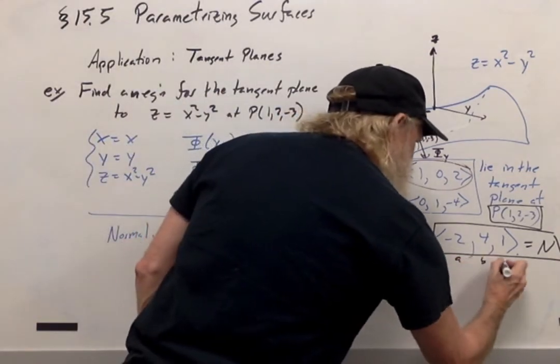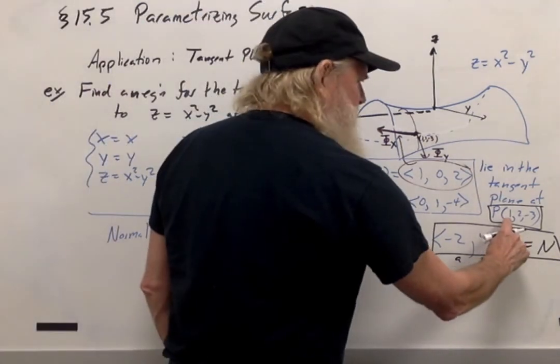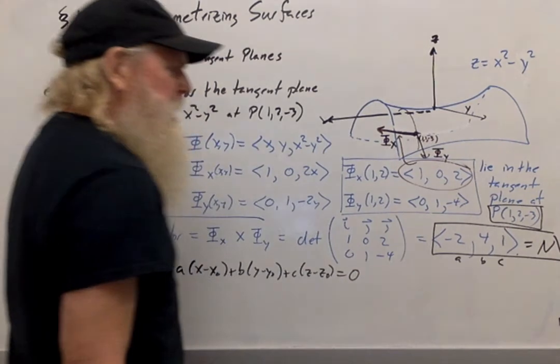Where a, b, and c are the components of the normal vector, and x0, y0, z0 are the coordinates of P.